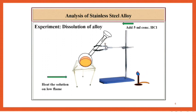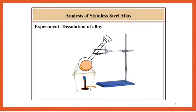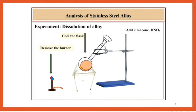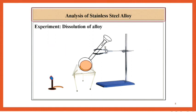Heat the solution on low flame. If the alloy does not dissolve, remove the burner and cool the flask. Thereafter add 2 ml concentrated HNO3 and heat the solution again until the alloy gets dissolved.